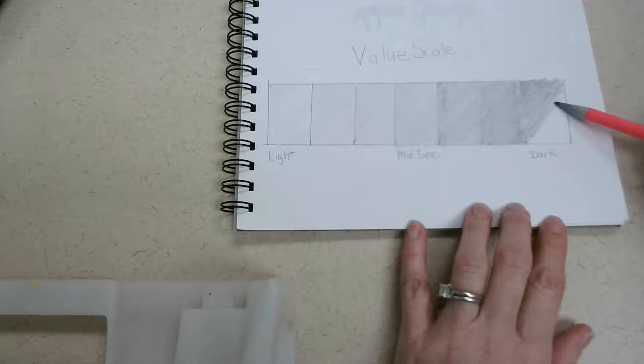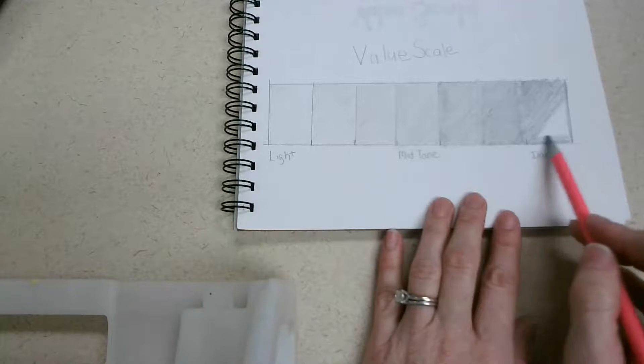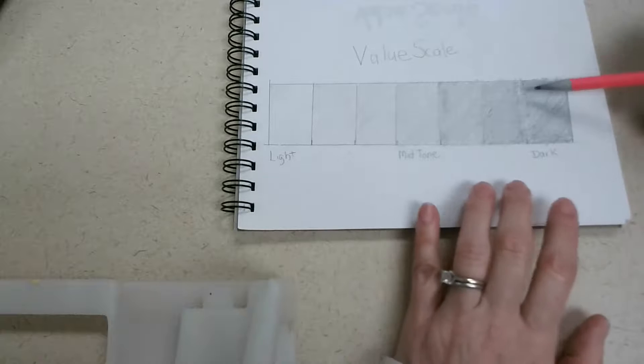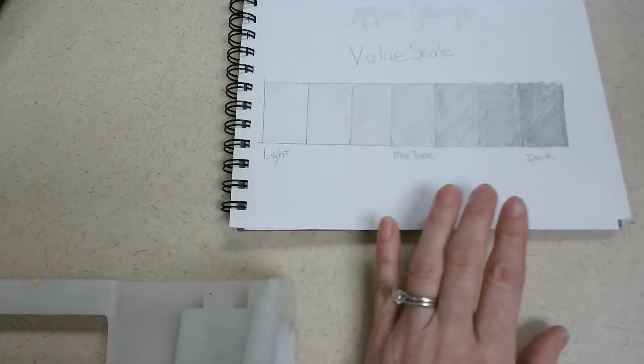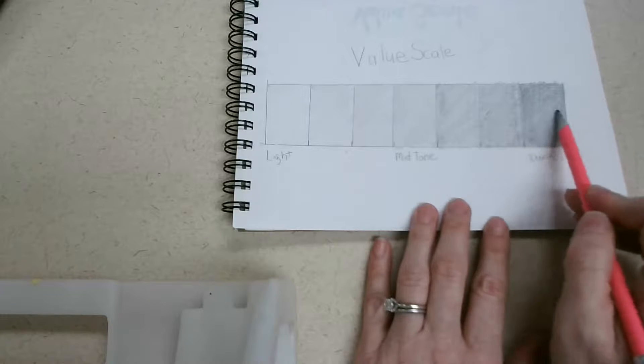But again, if it's not dark enough, you just add some more layers of pencil on top. So I'm going to kind of outline my box and then fill it in. So once I have the base down, I'm going to go in the other direction again and go side to side.